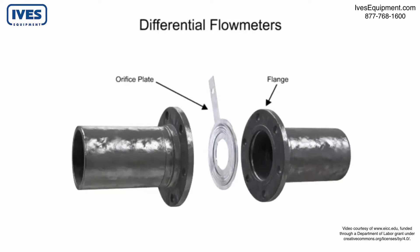The Differential Flow Meter, whether Venturi tube, flow nozzle, or orifice plate style, is an inline instrument that is installed between two pipe flanges.